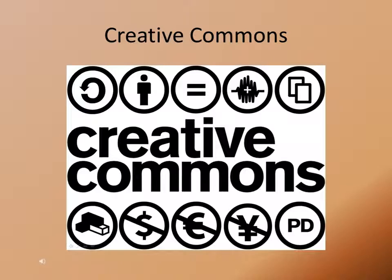Fortunately, many creators of images, texts, and other sources of information have licensed their works so that others may use them easily in their own creations. The Creative Commons organization, for example, allows creators of intellectual property to permit others to reuse, repurpose, create derivatives, and so on using a set of common attribution licenses. Creators of intellectual property decide in advance how much of their work can be used and in what manner it might be used by others.